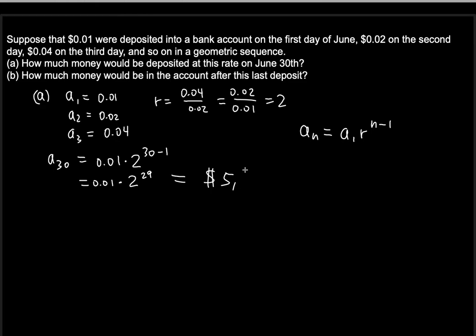$5,368,709.12. So this would be the amount that you would be depositing on June 30th, if you were to continue depositing in a geometric sequence fashion.